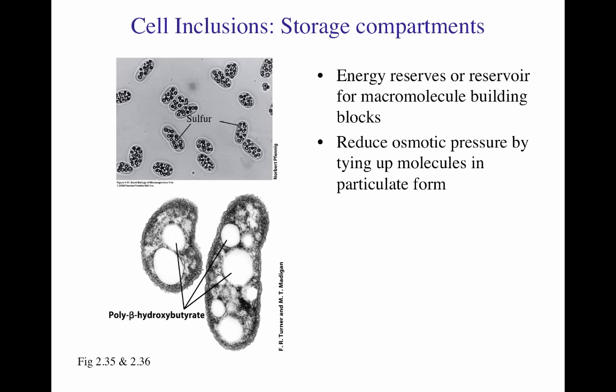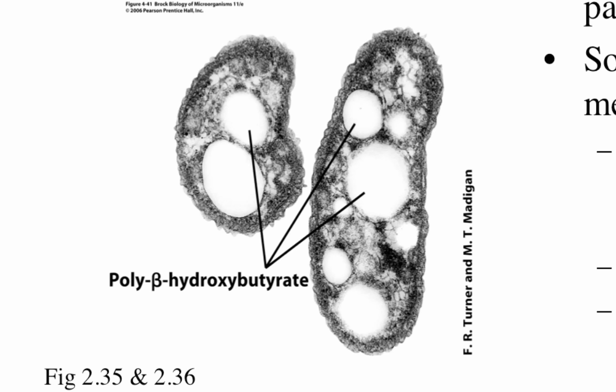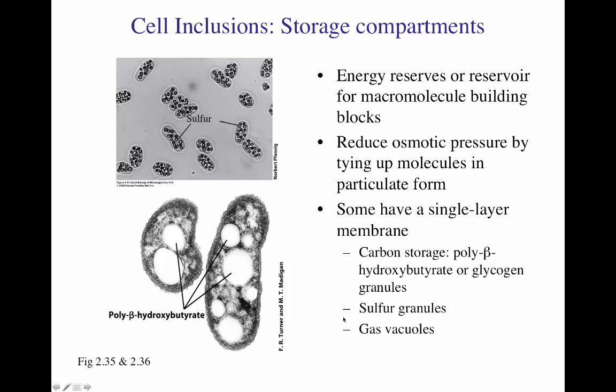By having a great amount of those solutes inside the cell, the microorganism is considered osmotically stable. Some inclusions can have a single membrane layer — for example, poly-beta-hydroxybutyrate granules inside bacteria are designed to store poly-beta-hydroxybutyrate, which is a carbon storage, or they can contain glycogen granules.